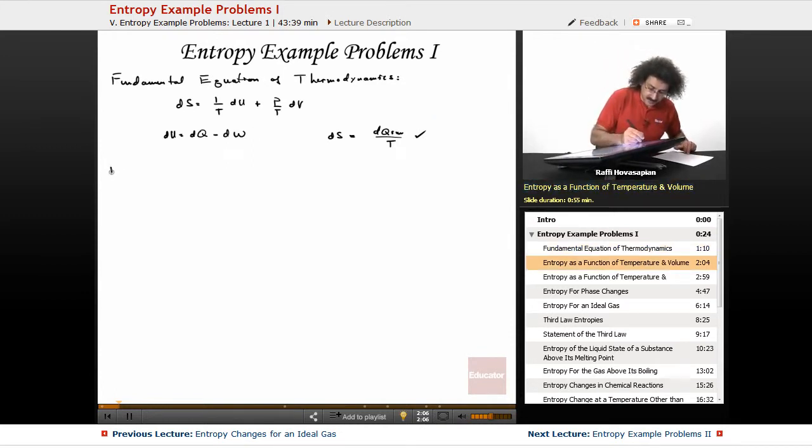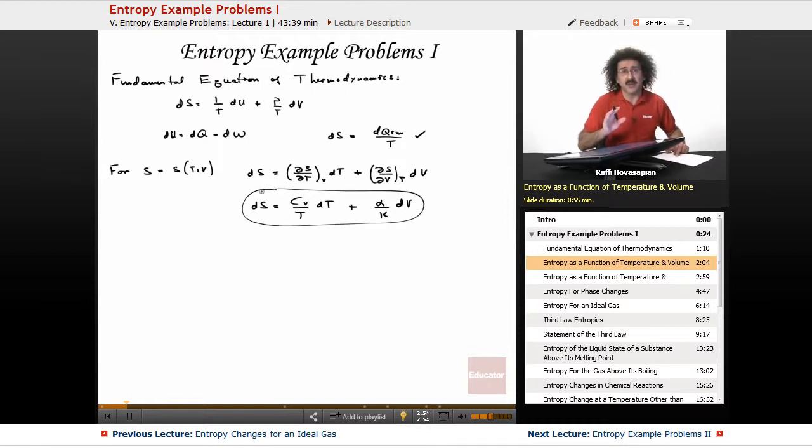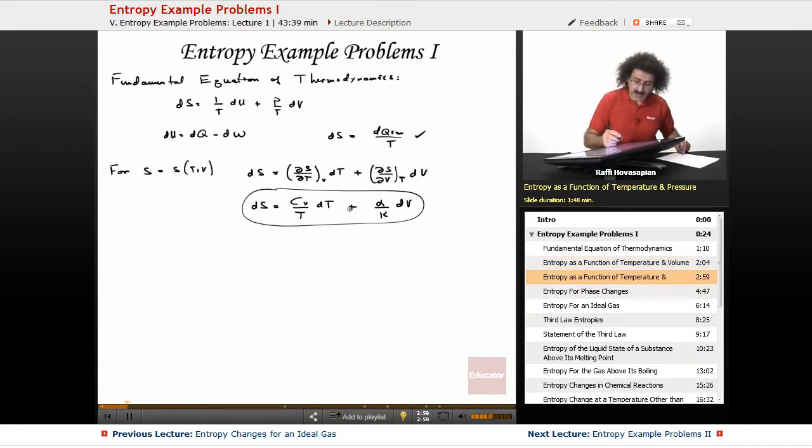Now, for entropy as a function of temperature and volume, this is what you want to know. You want to know the total differential expression, which is always easily derived. You just take the derivative, so it's going to be ds over dt constant V dt plus ds dv under constant T dv. And the actual equation that you want to bring to the table is ds equals CV over T dt plus alpha over kappa dv. This is the equation that you want to know. Just like for energy, absolutely, you have to know this. Most problems begin with this equation or the next one that I'm going to write.